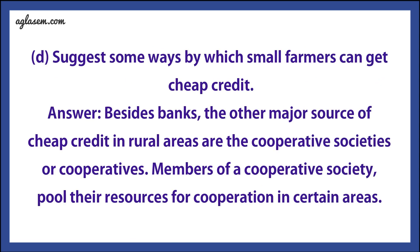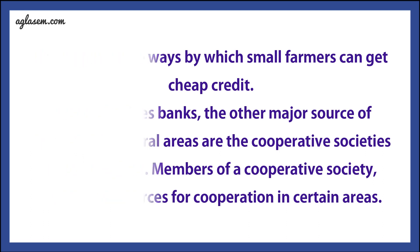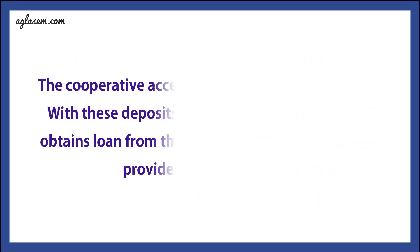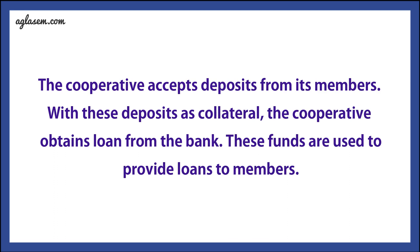Part D: Suggest some ways by which small farmers can get cheap credit. Answer: Besides banks, the other major source of cheap credit in rural areas are cooperative societies or cooperatives. Members of cooperative societies pool their resources for cooperation. The cooperative accepts deposits from its members, and with these deposits as securities, the cooperative obtains loans from banks. These funds are then used to provide loans to members.